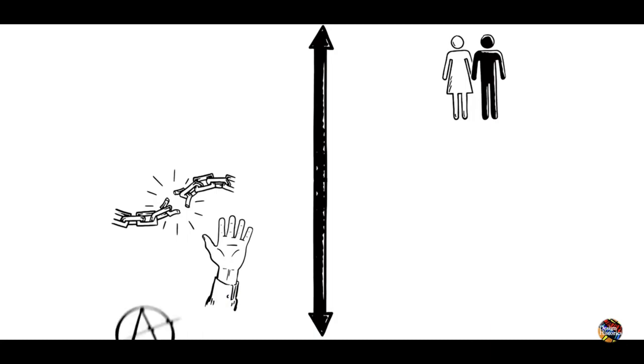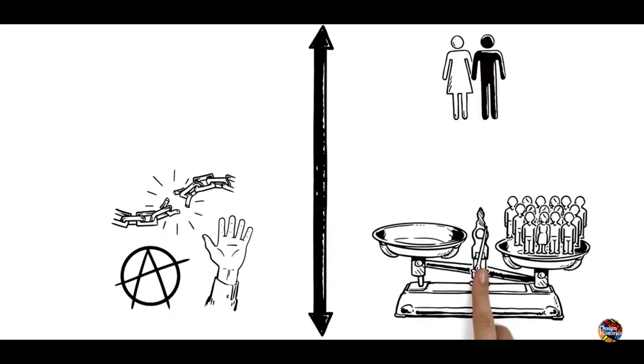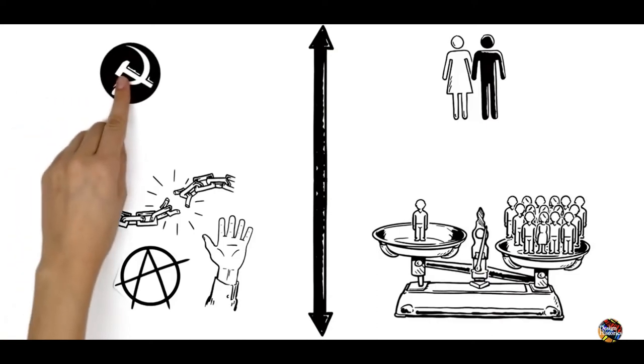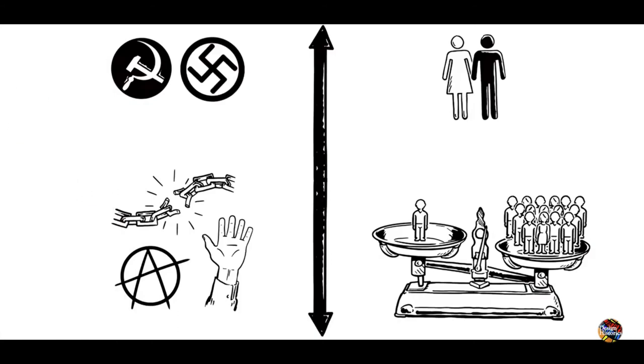At its most extreme, we find anarchists, while at the top of the graph, people believe in group rights over individuals. At the very top, we find totalitarian regimes: communists on the left and Nazis on the right.